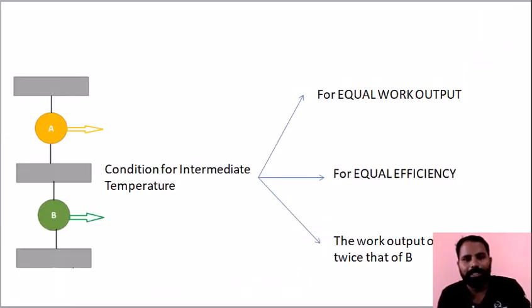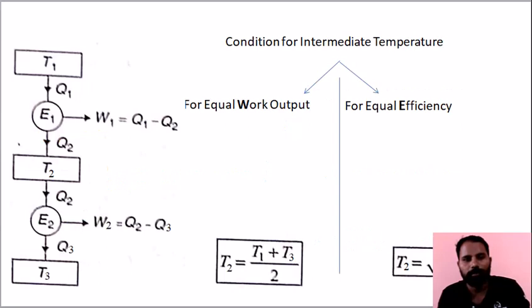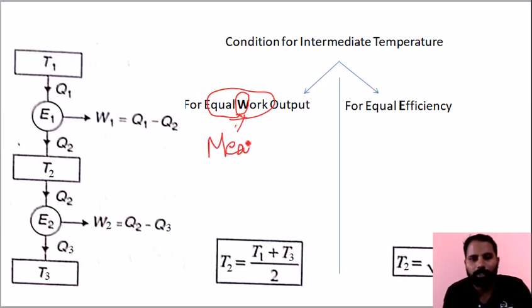If you have two heat engines connected at intermediate temperature, there are three conditions. The two heat engines E1 and E2 are connected. The first condition is equal work output. The shortcut is W for work, M for mean - intermediate temperature is the average of T1 and T3.